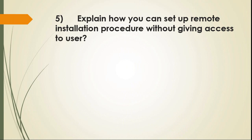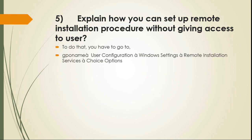Question 5: Explain how you can set up a remote installation procedure without giving access to the user? To do that, you have to go to User Configuration > Windows Settings > Remote Installation Services > Choice Options.